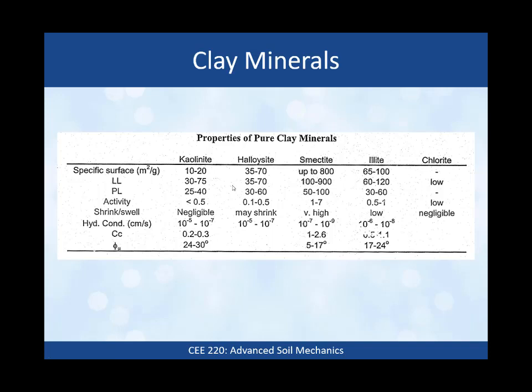Looking at engineering properties of pure clay minerals: specific surface area for kaolinite tends to be 10 to 20 meters squared per gram. Halloysite is a little higher at 35 to 70 meters squared per gram. Smectite, which contains montmorillonite, can have specific surface area as high as 800 meters squared per gram — one gram of smectite can cover a football field. Illite is intermediate at 65 to 100 meters squared per gram. Chlorite, being a bulky mineral, doesn't have a quantified specific surface here.